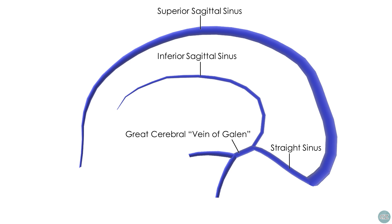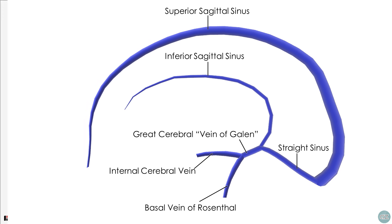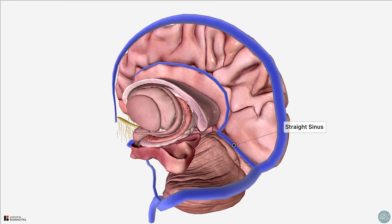The great cerebral vein is one of the deep cerebral veins, the other important pair being the internal cerebral veins. The paired internal cerebral veins run posteriorly to unite and join the basal vein of Rosenthal to form the great cerebral vein of Galen. The straight sinus is angled posteriorly and inferiorly, and drains into the confluence of sinuses.